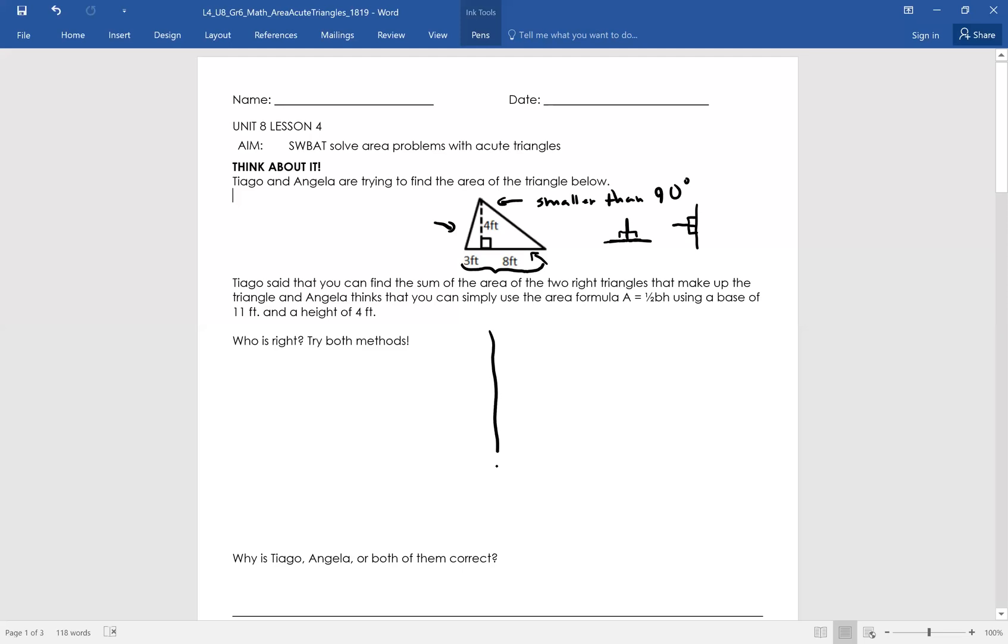So I'm going to split this into two. And I'm going to put the left side as Tiago. And I'm going to put the right side as Angela. All right. So it looks like Tiago said we can find the sum of the areas that are two triangles. Okay. So I can split this into two triangles.